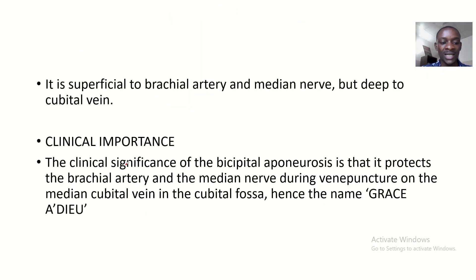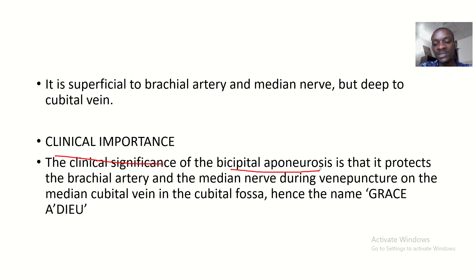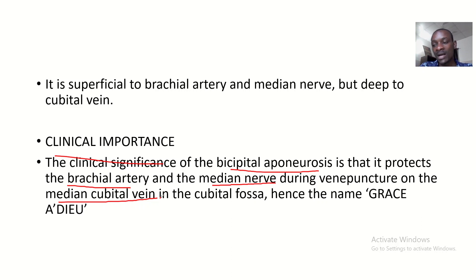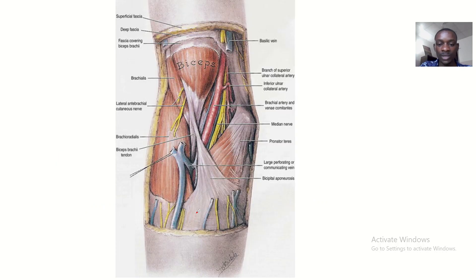We are building on a point here: the clinical importance of the bicepital aponeurosis is that it protects the brachial artery and the median nerve when you want to puncture that area. During venipuncture on the median cubital vein — for example, when accessing the vein with a cannula to transfuse blood — the bicepital aponeurosis protects the brachial artery and the median nerve because you don't need to access them. Because of this protection, the bicepital aponeurosis is known as the grace adieu fascia.